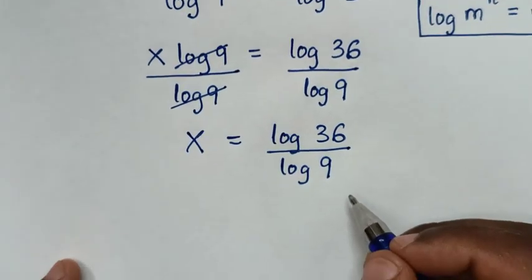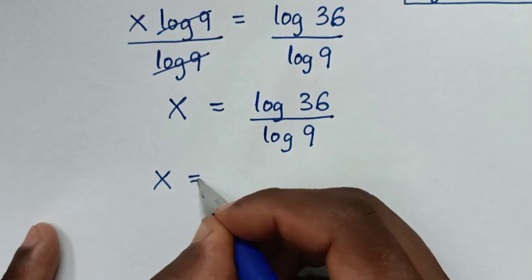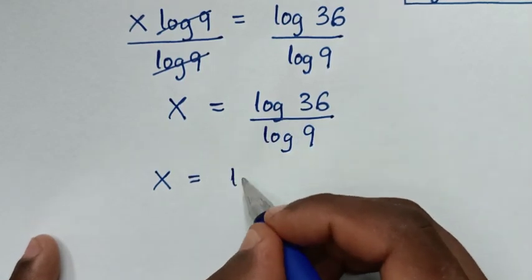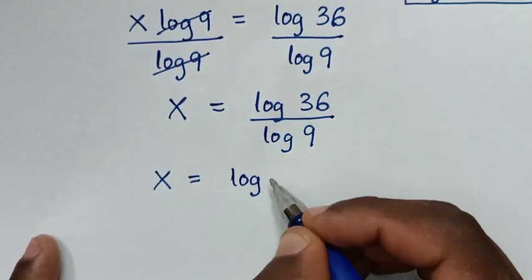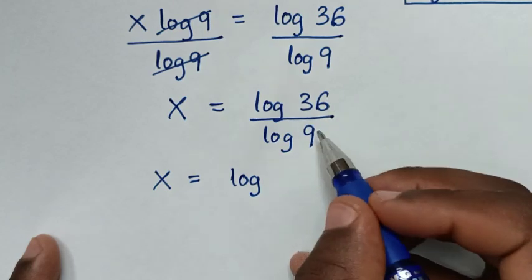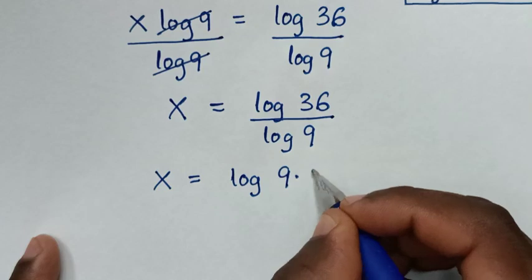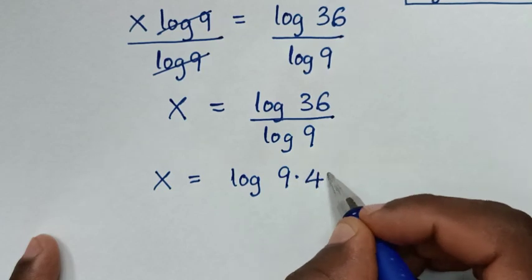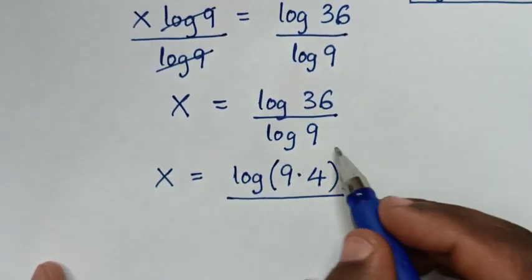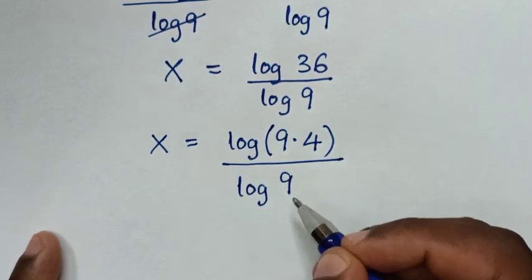Then in the next step, it will be x is equal to log of 36, where 36 is the same as 9 times 4, in the bracket, over log of 9.